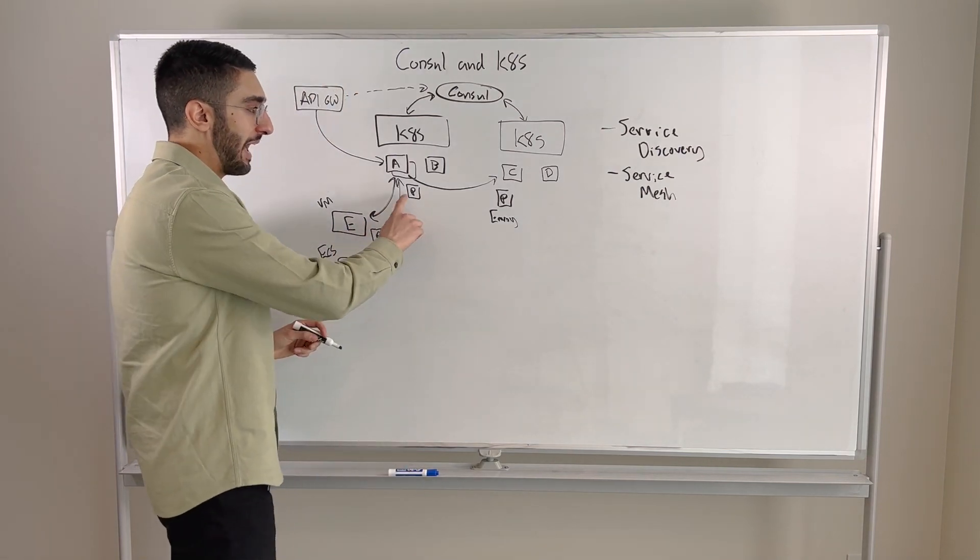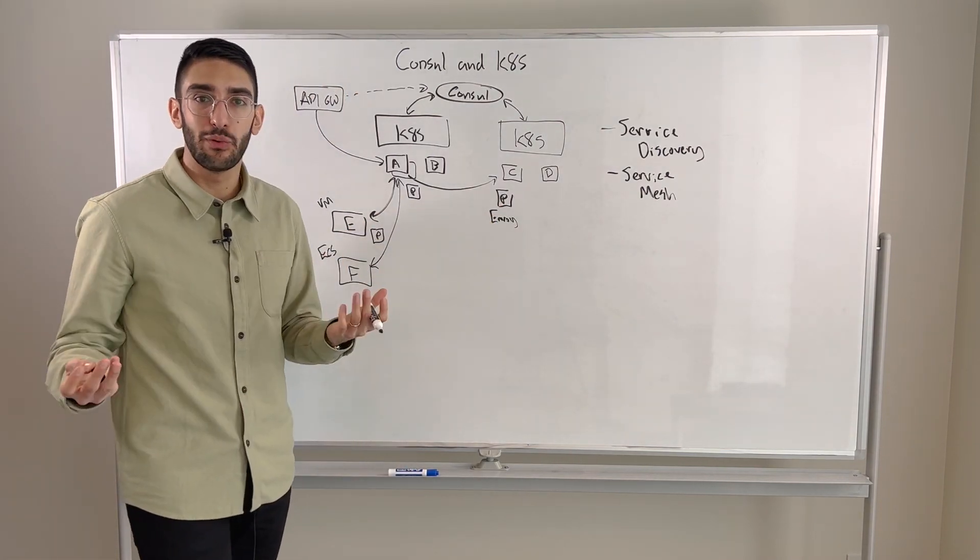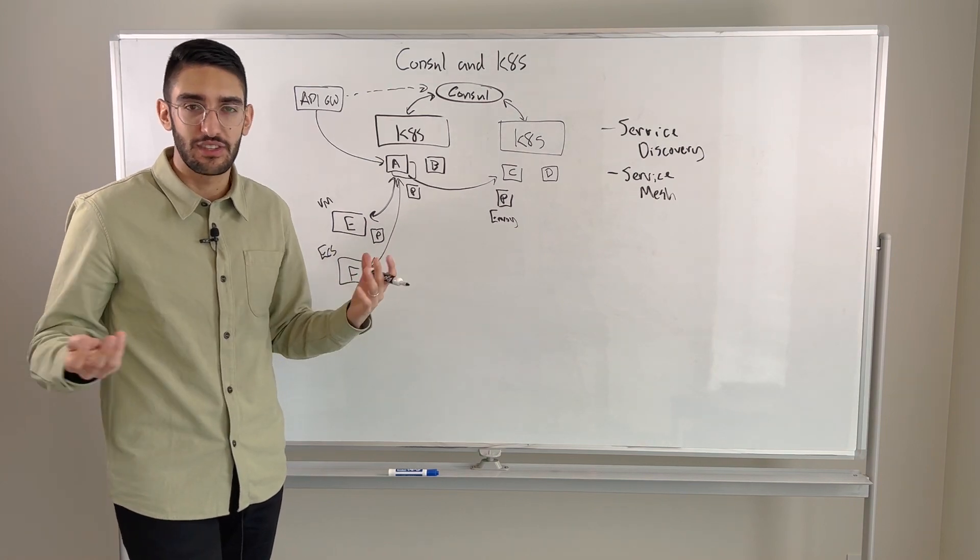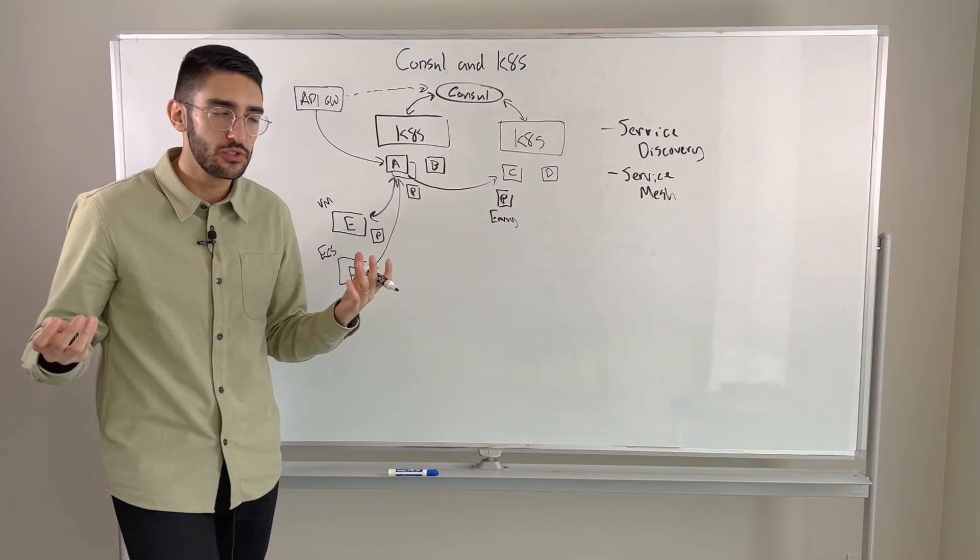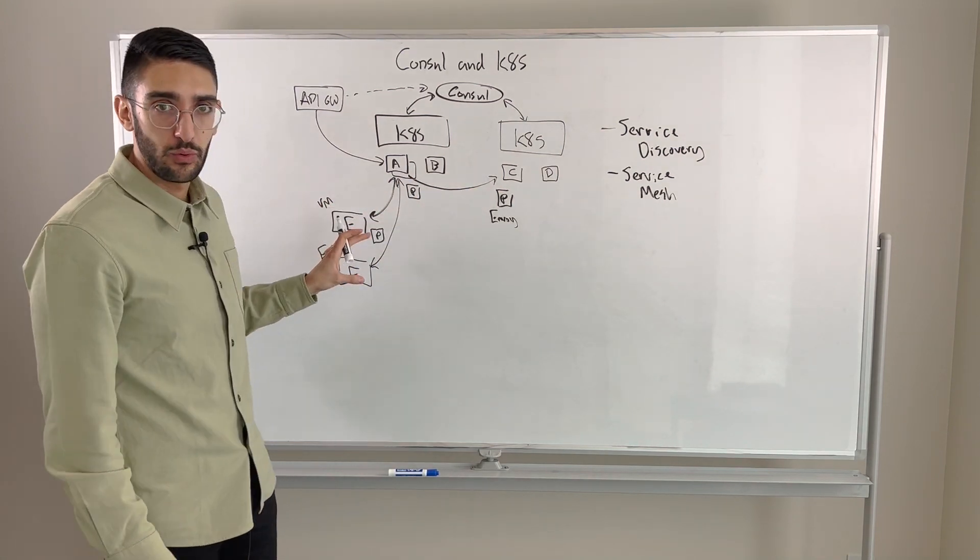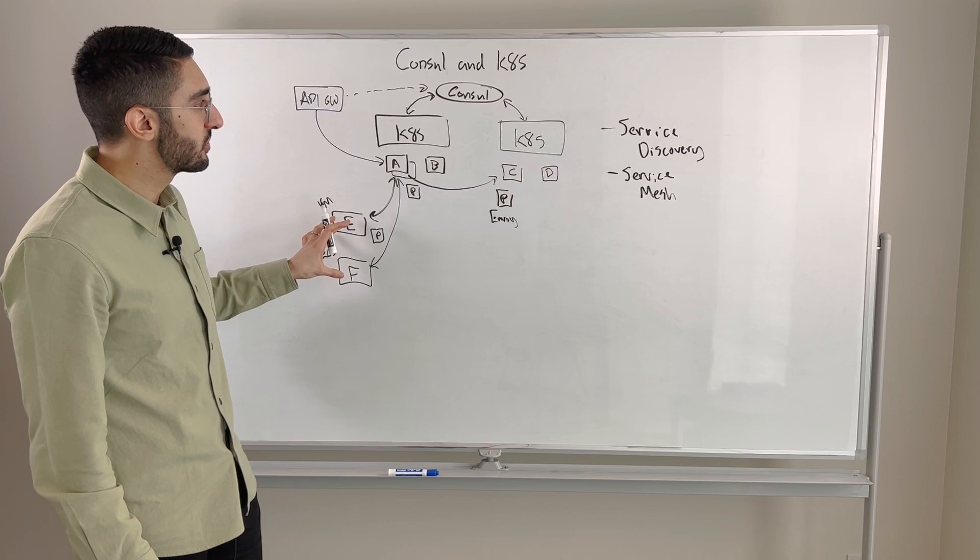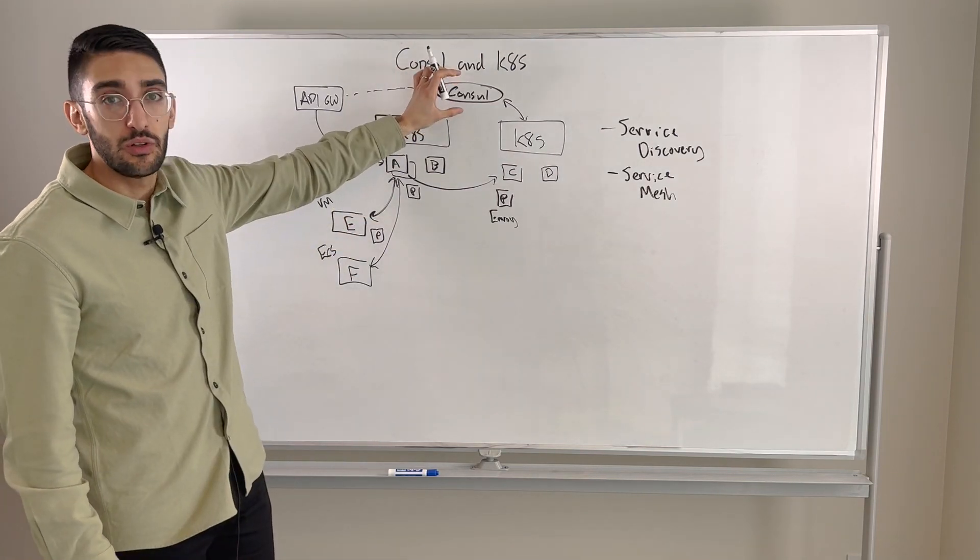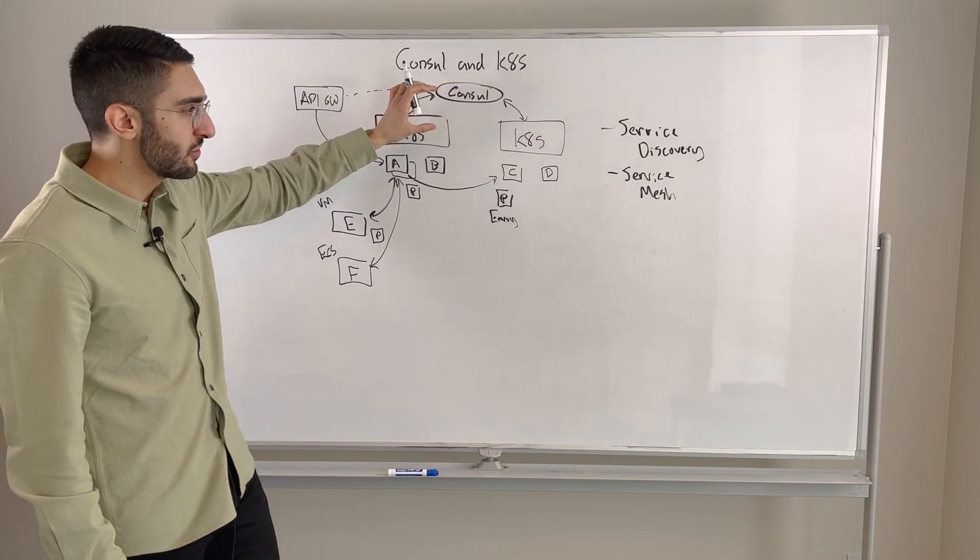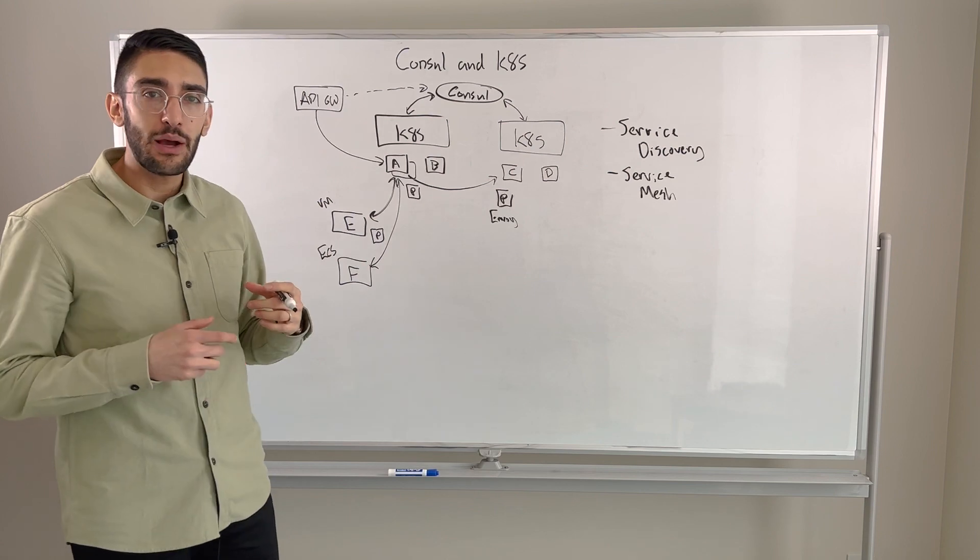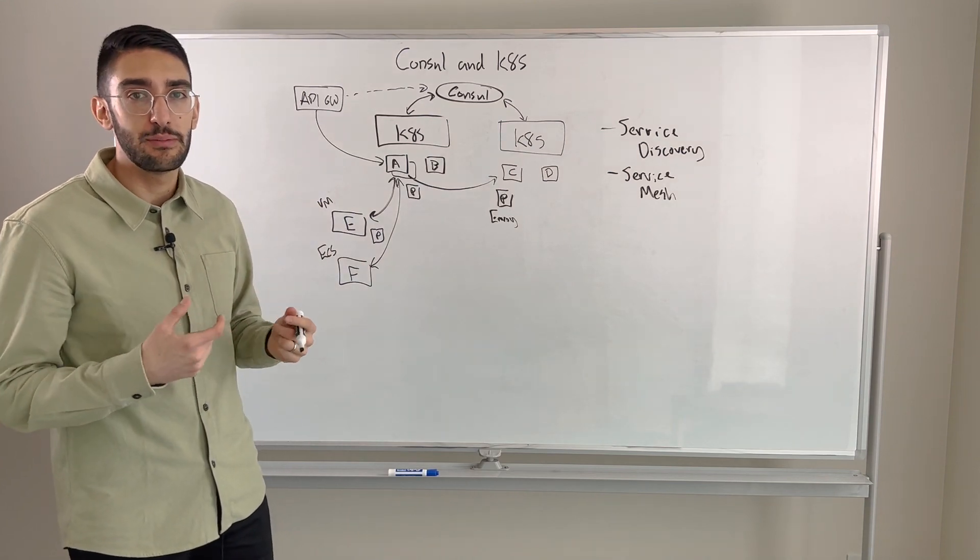Now the problem with having proxies distributed everywhere is that you don't want to have to manage configuration distributed across thousands or tens of thousands of nodes. So while we're distributing the data plane everywhere with the proxies running everywhere, we're centralizing the control plane and the management metadata to some more central such as Consul. So that really becomes the heart of service mesh. The value of doing that is now we can start to define various types of controls.